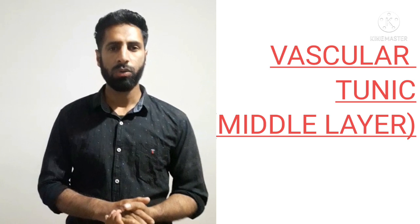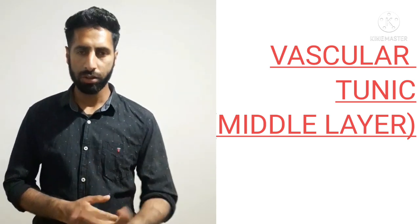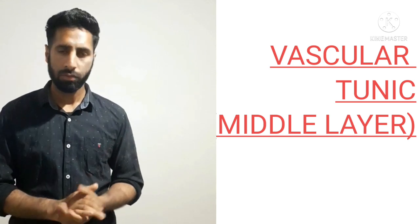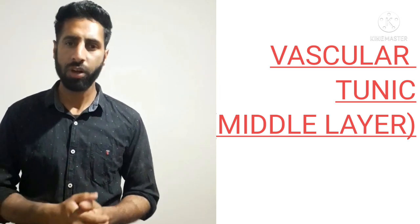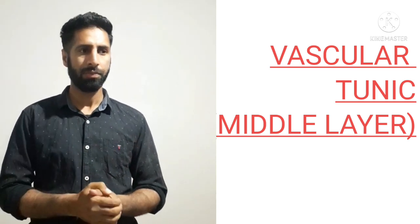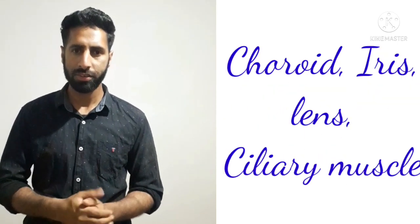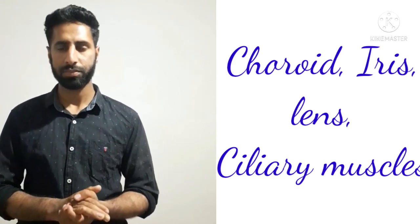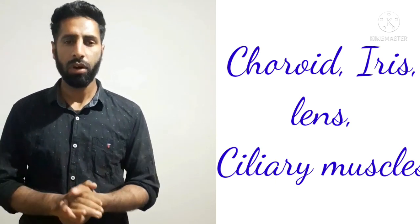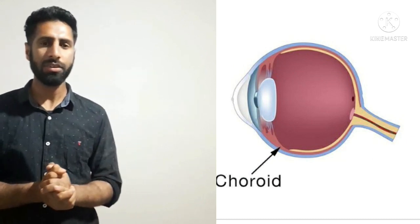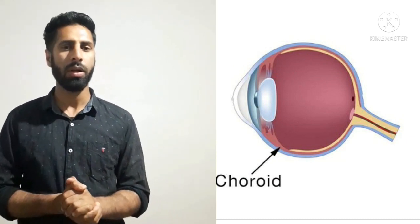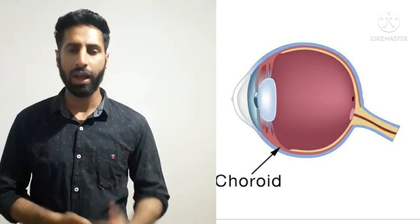Now let's talk about the second or middle layer of the eye — the vascular tunic. The vascular tunic consists of many parts: choroid, lens, ciliary muscles, and iris. The choroid is a vascular connective tissue that lies between the sclera and the retina.